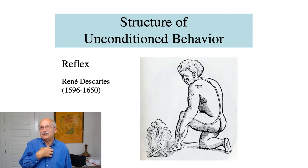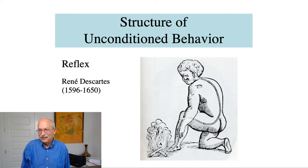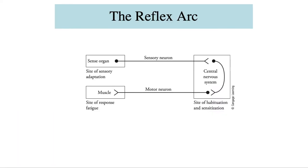The word 'reflex' is based on a notion of 'reflect' — the behavior sort of reflects some aspect of the stimulus. The next slide shows a more modern diagram of the neural circuit of a reflex arc. Reflexes are triggered by a stimulus that activates sense organs; that information travels in sensory neurons to the central nervous system — the spinal cord and up to the brain, though not always — where it makes connections with an interneuron, which connects to a motor neuron that activates the muscles.